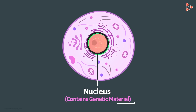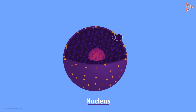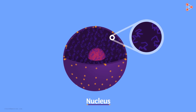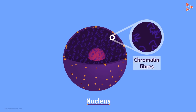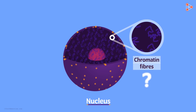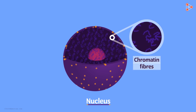Now, what could this genetic material be? If we zoom in this nucleus, we find these tangled thread-like structures. These are called the chromatin fibers. They are the most important component of the nucleus and even the complete cell, because these chromatin fibers enclose the genetic material within them.